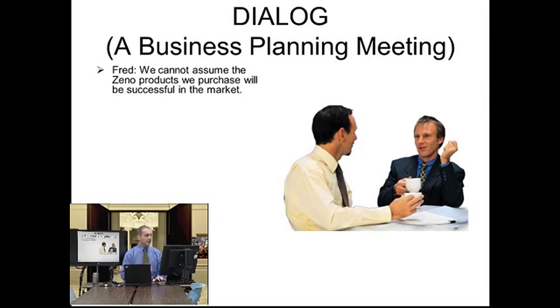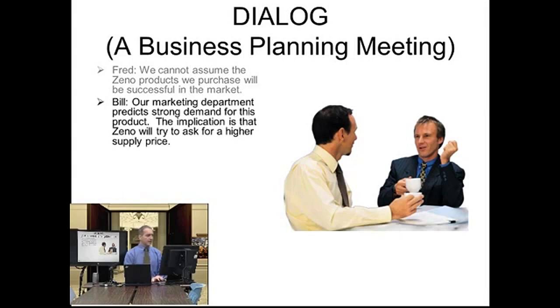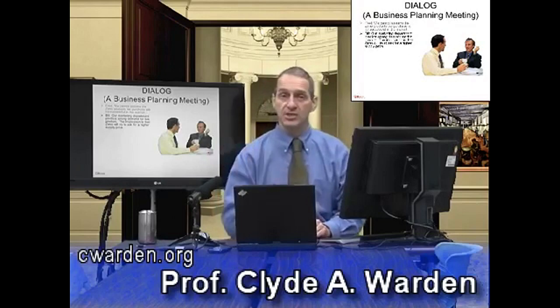Fred is going to talk with Bill to prepare for another negotiation. Fred says, 'We cannot assume the Xeno products we purchase will be successful in the market.' Bill says, 'Our marketing department predicts strong demand for this product. The implication is that Xeno will try to ask for a higher supply price.' Fred and Bill are planning before the negotiation — a key point. They're figuring out what's the value of what they're trying to buy from Xeno.